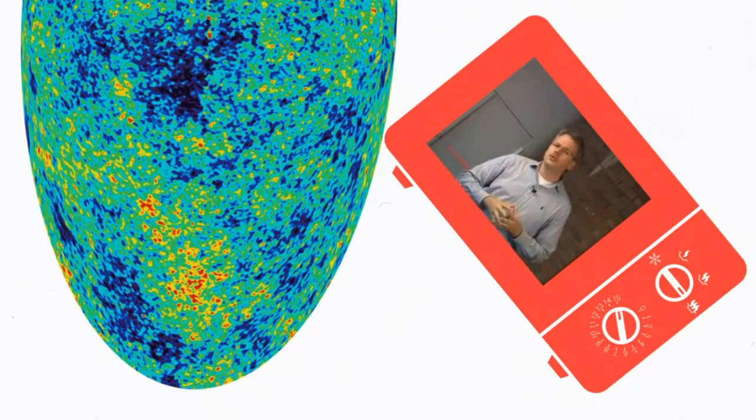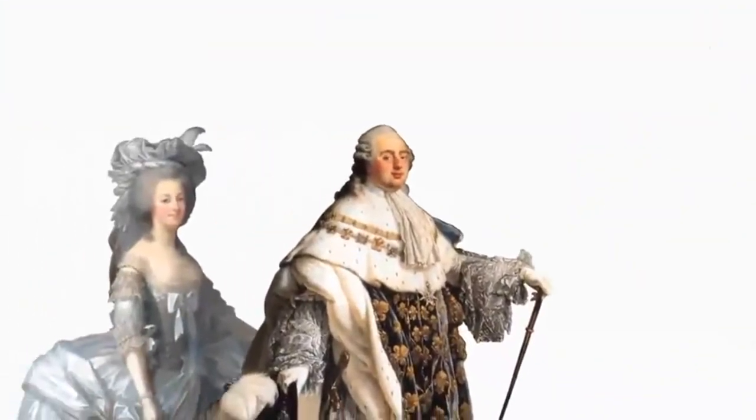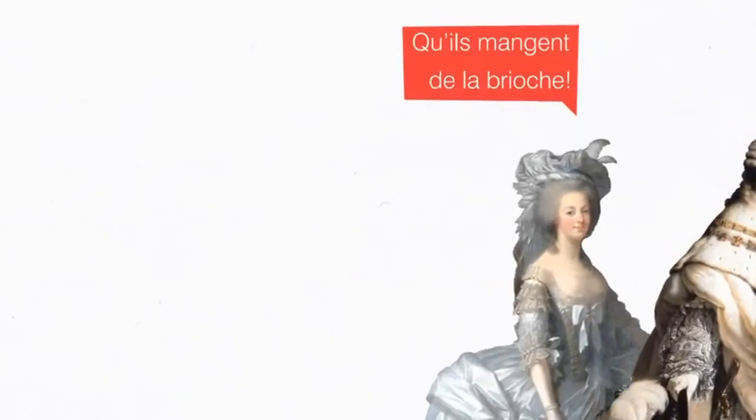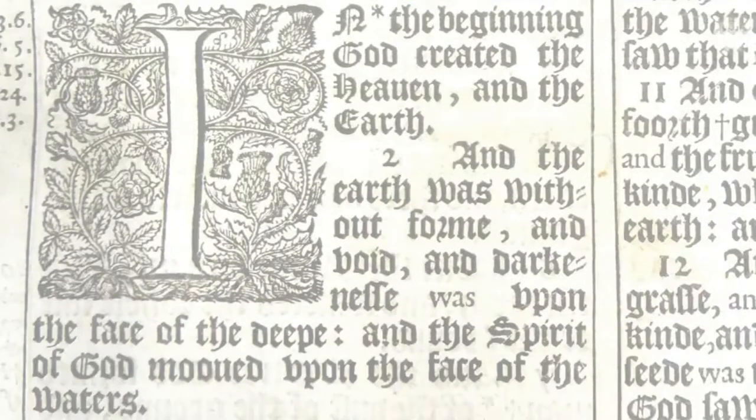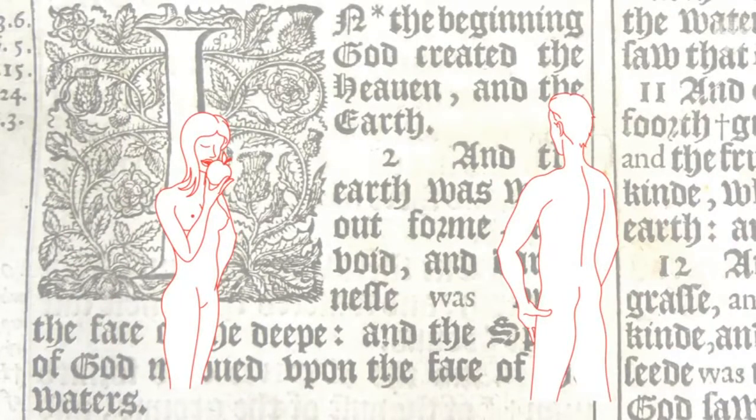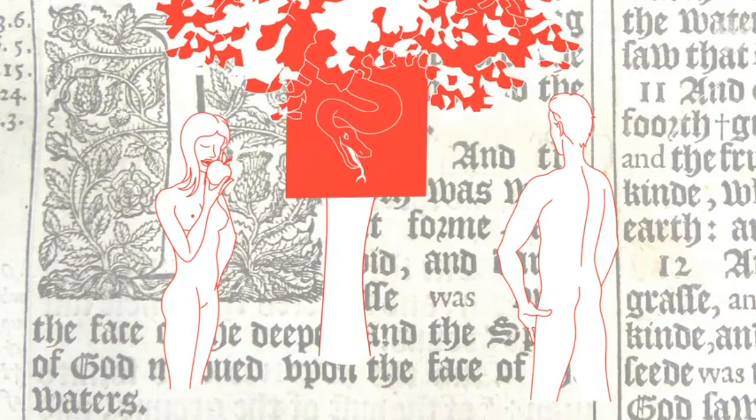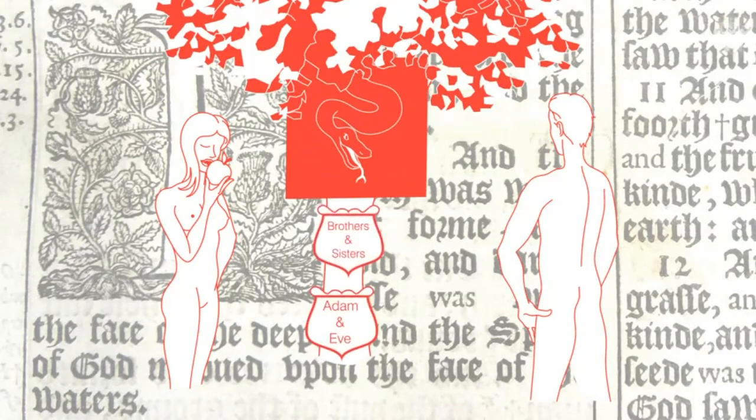So Brad, you proclaim with the smug complacency of a French aristocrat that the standard model of cosmology is miserable science and that it sounds like a nice little storybook. For someone who fancies the story of two naked people in a garden with a talking snake who then procreated, apparently by way of incest, this reeks of blatant projection. As we will soon find out, however, your introductory slur on the Big Bang theory is rather dim compared to the shenanigans emanating from your next excretion.